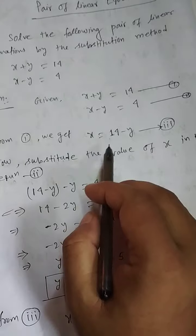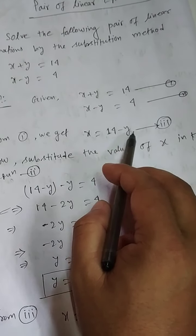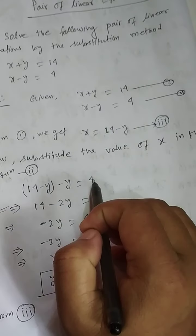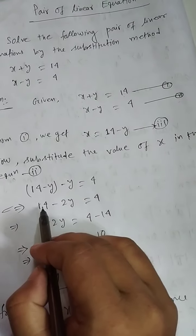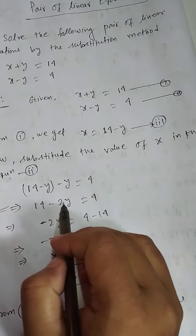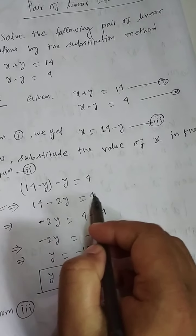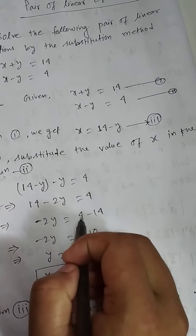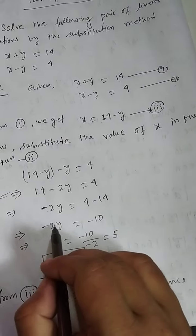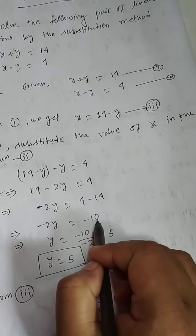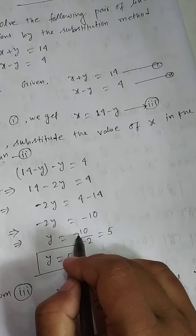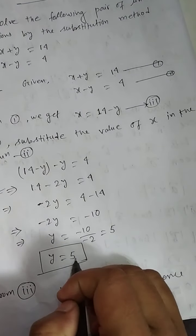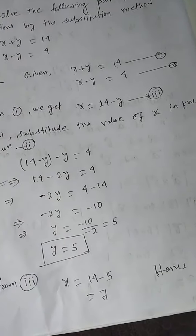Now substitute the value of x in equation number 2: x is replaced by 14 minus y, so 14 minus y minus y equals 4, which gives 14 minus 2y equals 4. So minus 2y equals 4 minus 14, that is minus 2y equals minus 10, therefore y equals 5.